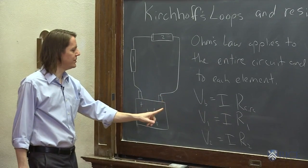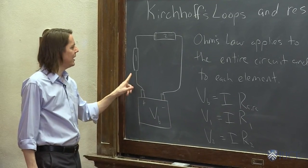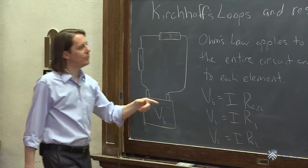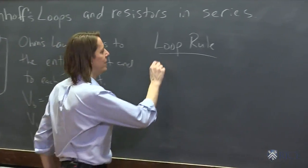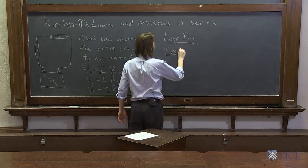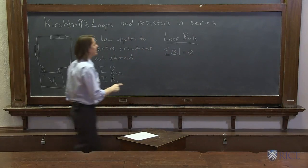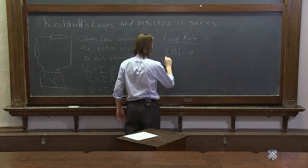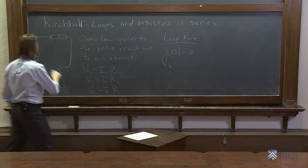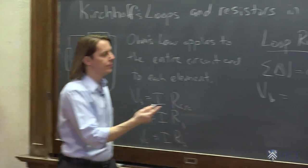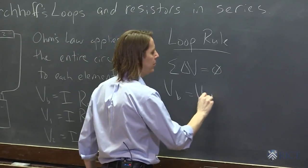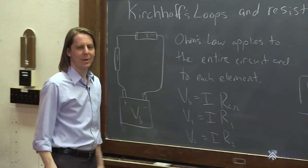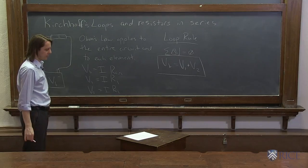So if you start here, the voltage increases when you go across the battery by VB, and then it drops across resistors. You might hear the phrase voltage drop. So what the loop rule says is that the sum of the delta Vs, the voltages, has to be zero. So in this case, the only one that increases is VB. So how much you go up, VB, has to be equal to how much you come down, V1 and then back down to V2, V1 plus V2. So this is the extra information we need. It's sort of an insight about how voltage works in a circuit.